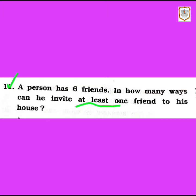We have already learned about the meaning of 'at least one'. At least one means minimum one or more than one. So if he has to invite six friends, in how many ways can he invite at least one friend? That means he has options: he can invite one friend, or two friends, or three friends, or four, five, or six. At least one means minimum one or more than one.